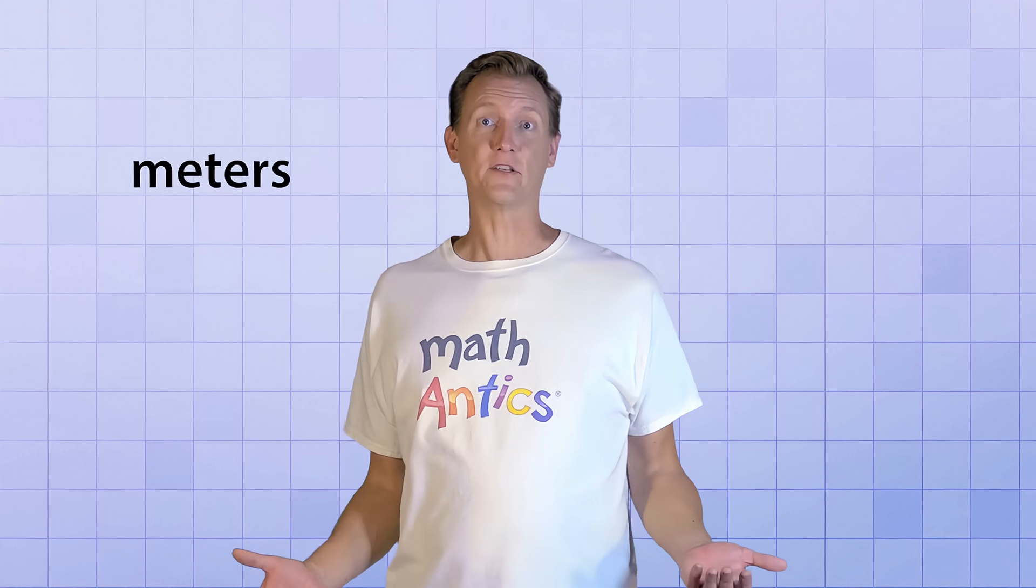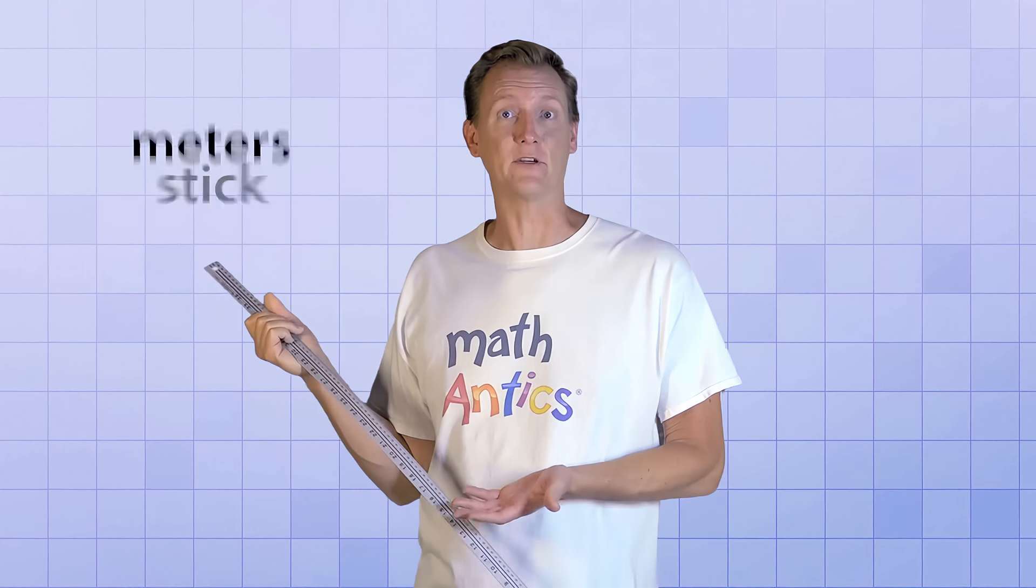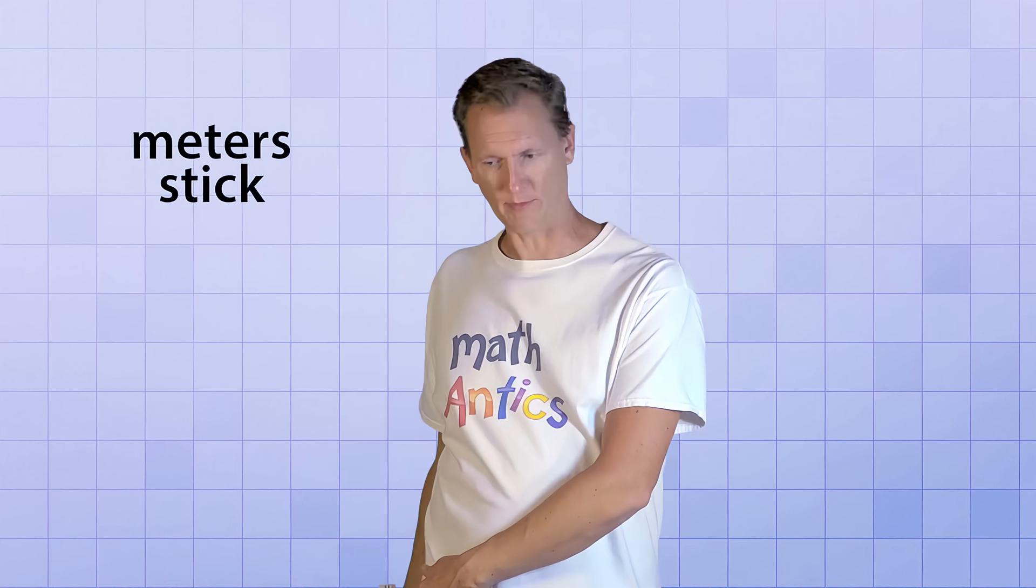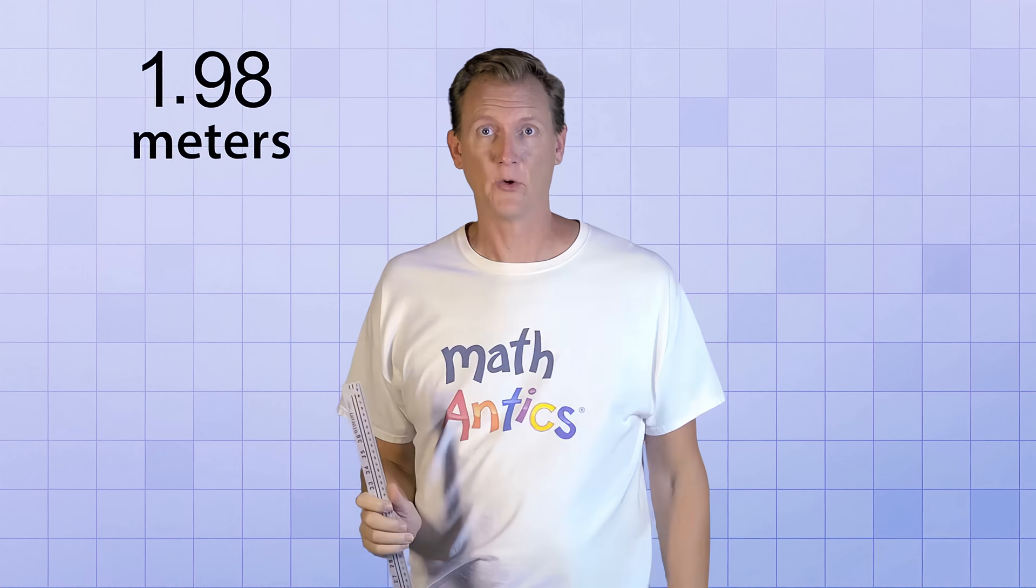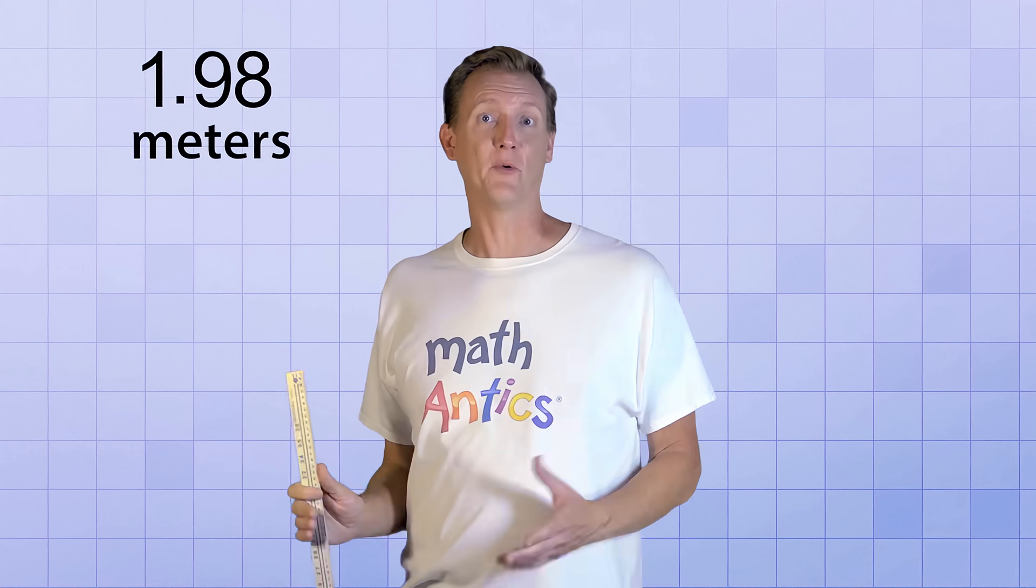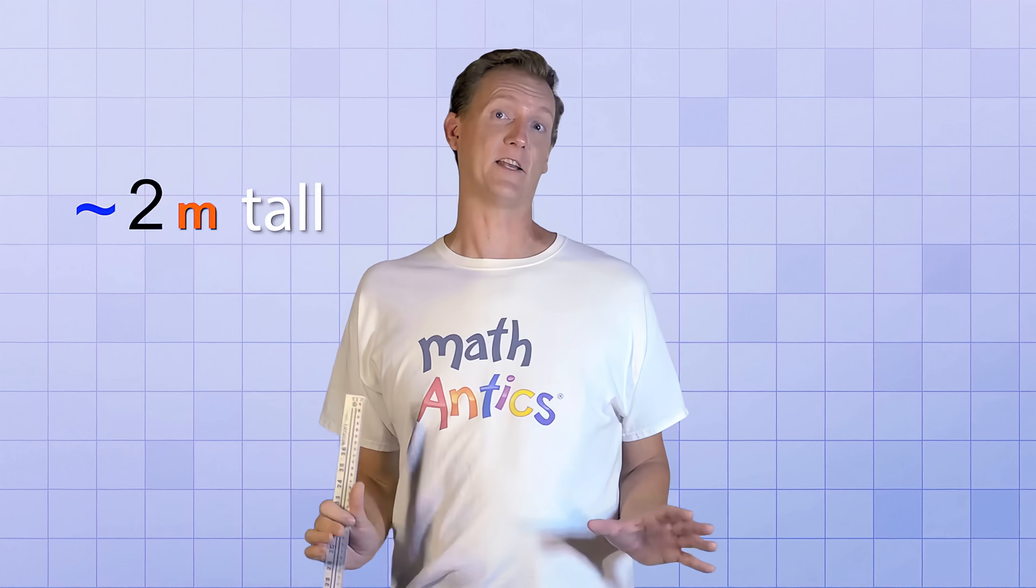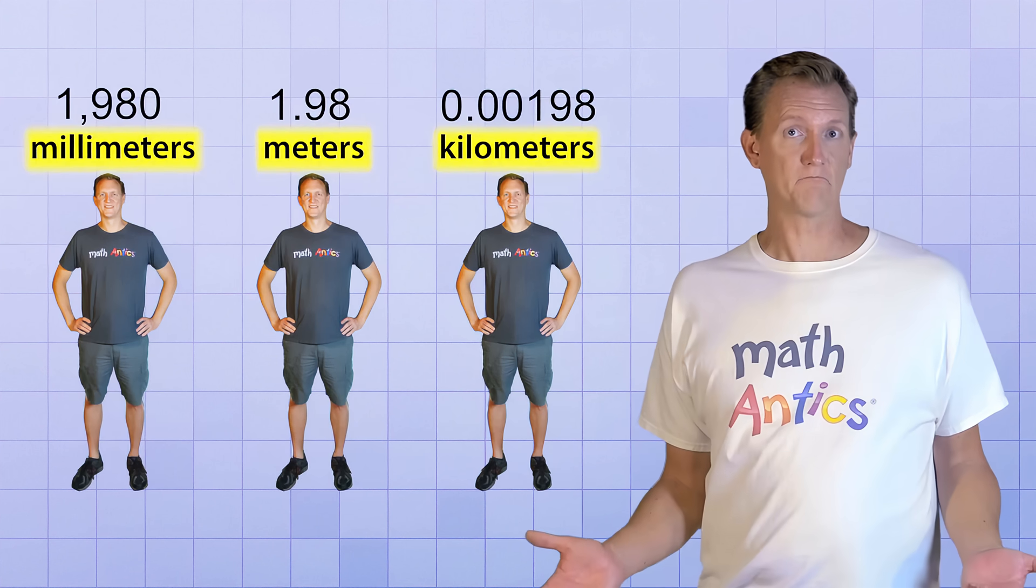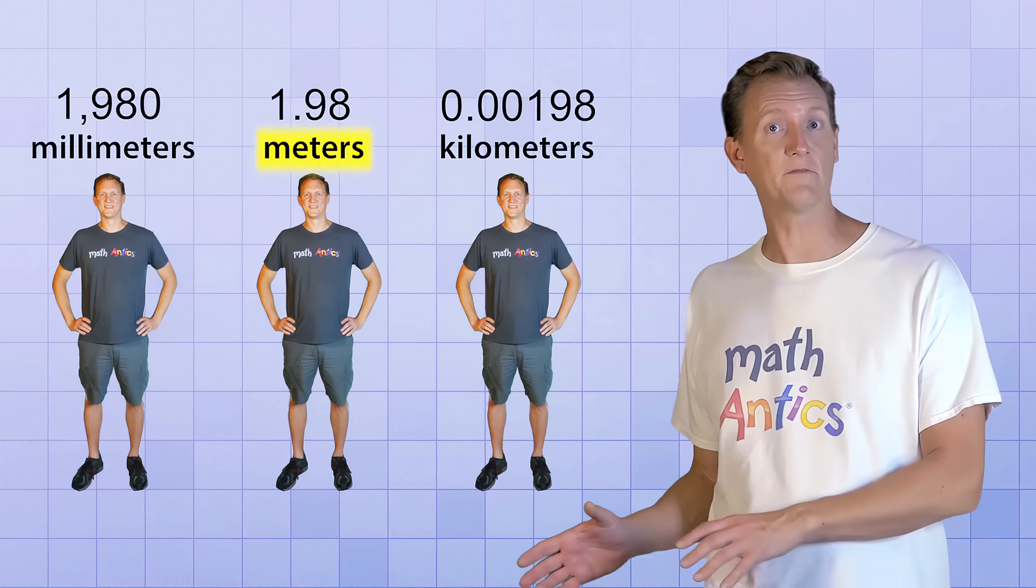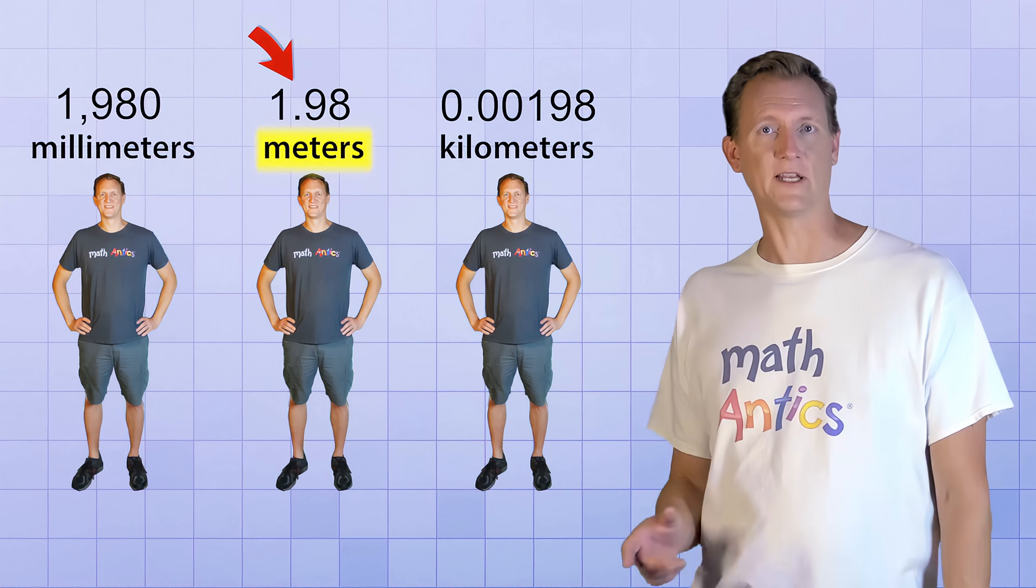But what if I choose a unit that's somewhere in between, like plain ol' meters? A meter is as long as this stick, which is why I like to call it a meter stick. And if I use it to measure my height, I'd be 1.98 meters tall, which is just a hair shy of 2 meters. So it would be fair to say that I'm about 2 meters tall, which is a nice easy number to work with. See the advantage of having different size units for measuring distances? You can choose a unit that's relatively close to the scale of the thing that you want to measure, so that the numbers you get are more relatable and easy to work with.